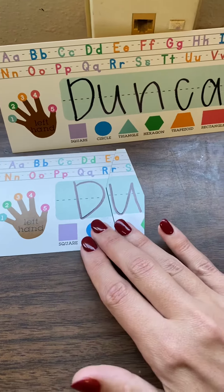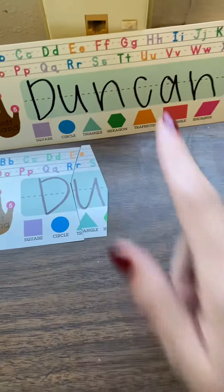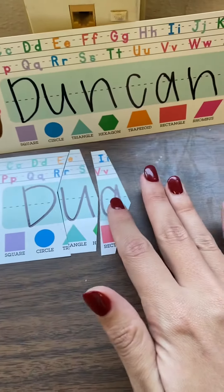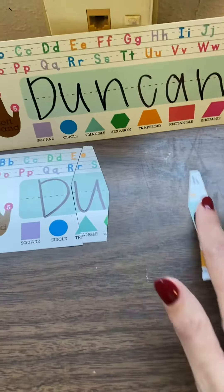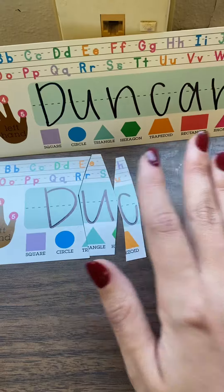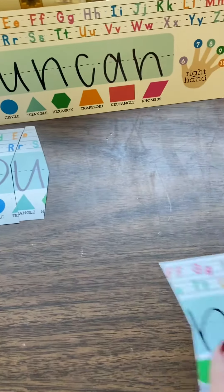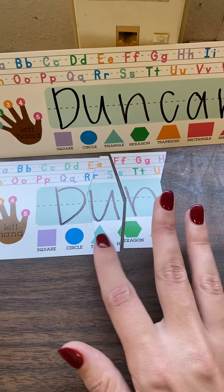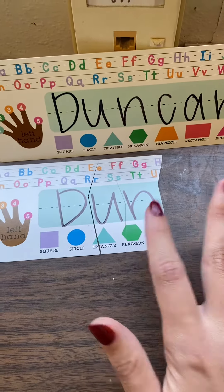Okay, now we're going to find the letter N. Let's see. Is that it? No. Is this? No. Oh, what about this one? I think that's it — let's see. That is it.